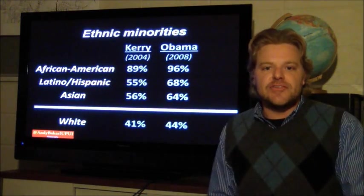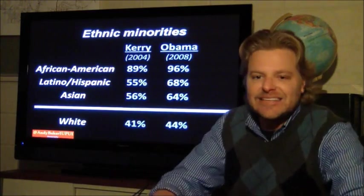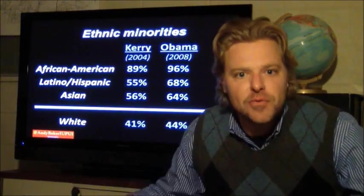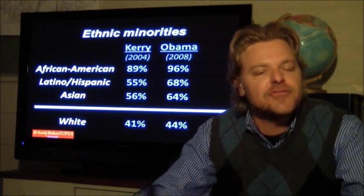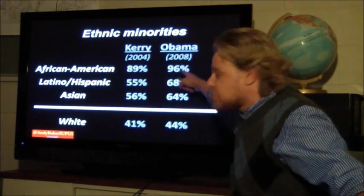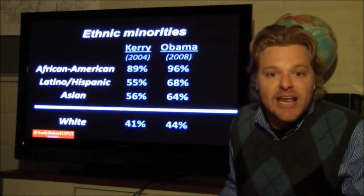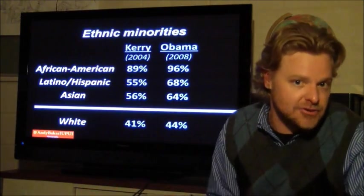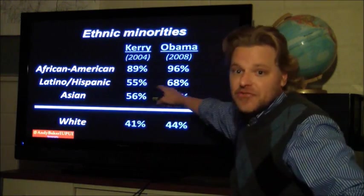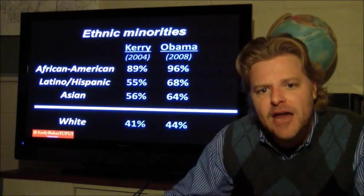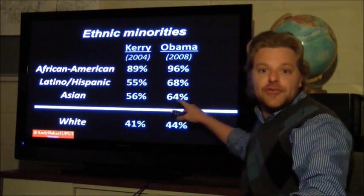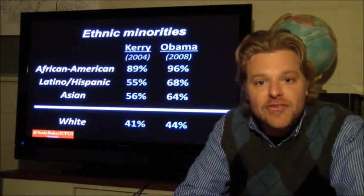Continuing on, the next demographic characteristic is ethnic minorities — African American, Latinos, and Asians. Looking at Obama in 2008, there was a 7% increase. That could be because he was an African American candidate with a legitimate chance to win, so African Americans were excited to get out and vote in high numbers for the Democratic candidate. African Americans typically always vote Democrat in presidential elections. One of the big jumps in the 2008 election was Latinos going from 55% to 68%. Why does that matter? Because they're an increasing proportion of the population, through in-migration and higher birth rates. Asians also increased considerably, and Obama even increased with white voters in 2008.